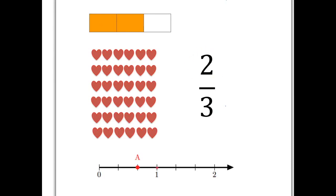Similarly, on our number line, we can take that unit from zero to one, divide it into three pieces and take two of them. And so here at A is where two-thirds sits on the number line, two pieces out of three.